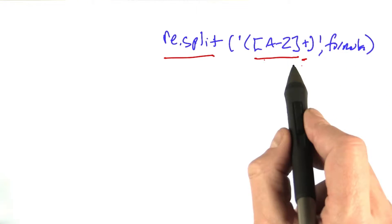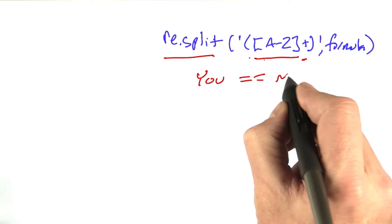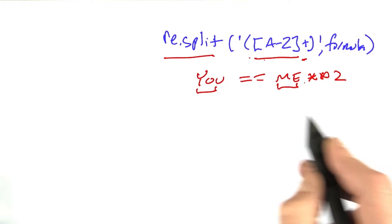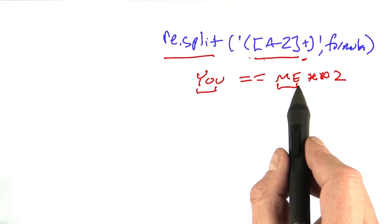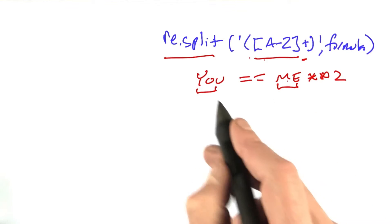and the parentheses means keep that result. When I have U equals ME squared, this part and this part will match, and they'll be returned as individual elements in this split, and so will the other parts.